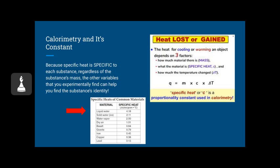So the heat for cooling or warming of an object requires three things: how much material there is, what the material is or its specific heat, and how much the temperature changed. So we're going to measure the temperature change, but because this specific heat is specific to each substance, we can find the substance's identity and other variables experimentally. So basically, you can see on this chart how liquid water has the highest specific heat, and that's what makes it so common to be used in these sorts of experiments.